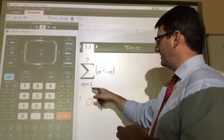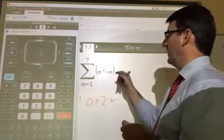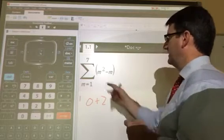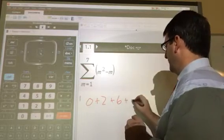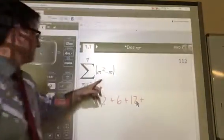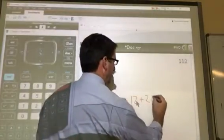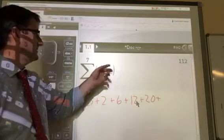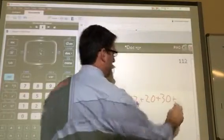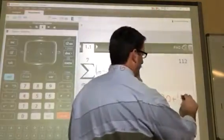If we plugged in 2, 2 squared is 4 minus 2 is 2. Plus, 3 squared is 9 minus 3 is 6. Plus, 4 squared is 16 minus 4 is 12. Plus, 5 squared is 25 minus 5 is 20. Plus, 6 squared is 36 minus 6 is 30. Plus, 7 squared is 49 minus 7 is 42.